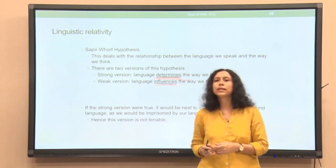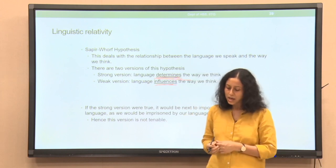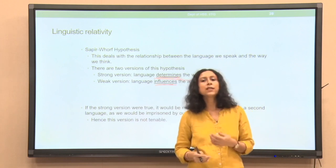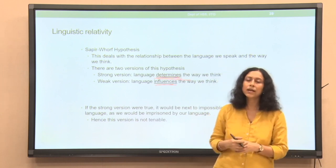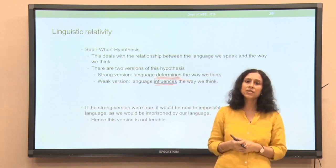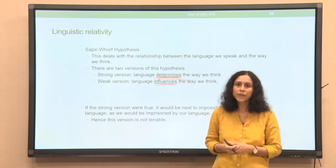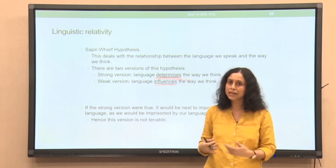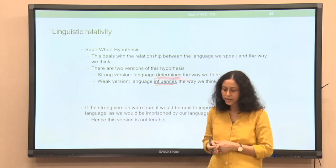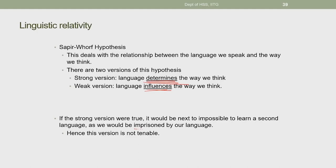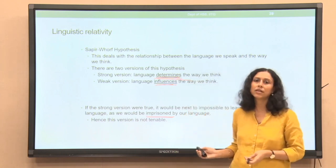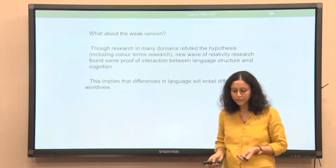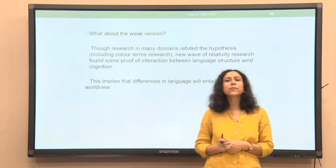If the strong version were true, it would be next to impossible to learn a new second language — one with a different way of looking at the world. A Dani speaker would not be able to learn English color terms if the strong Sapir-Whorf hypothesis held, because his color cognition would already be determined by his language's two-way differentiation. Our understanding and cognition would be imprisoned by language. However, Rosch was able to teach Dani speakers English color terms, so the strong version is not tenable.